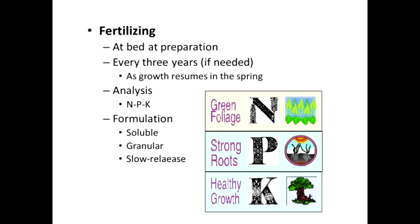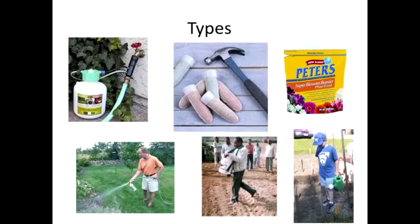We'll talk a little bit more about formulation in a minute. There are all sorts of different kinds of fertilizer products out there. They all have the NPK — the three numbers on them — but how you deliver those nutrients to the plants can really vary.